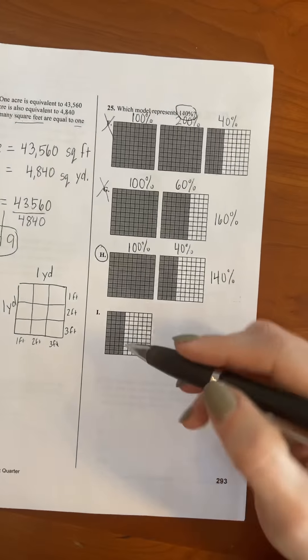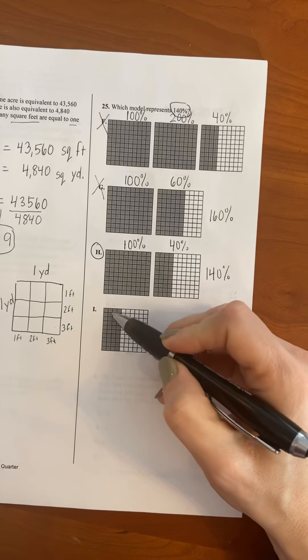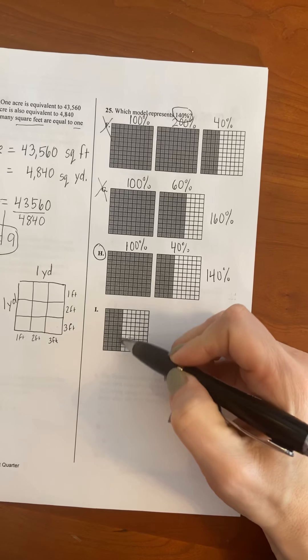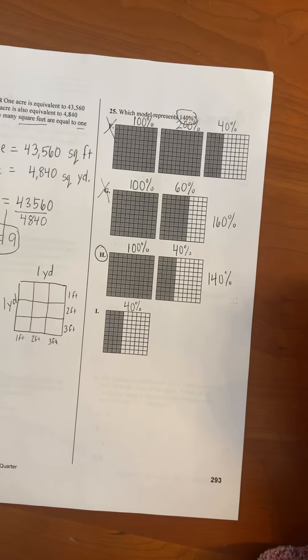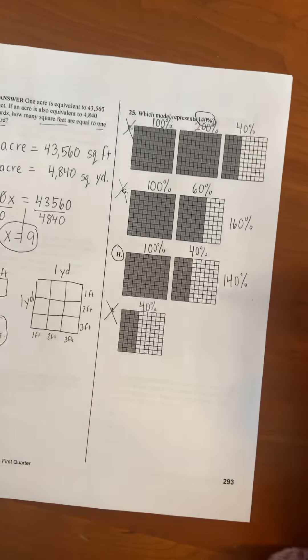And then for this one, we'll just verify. So 10, 20, 30, 40 out of 100 boxes are shaded. So this one is just 40 percent. There's no 100 with it. So that is not the correct answer. It's H.